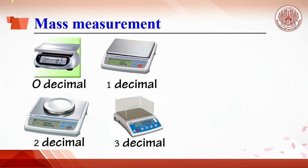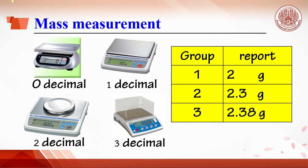Electrical balances are available in various decimal precisions. The higher the number of decimals, the more accurate the data. Looking at these three student group reports of an object's weight, we can conclude that student group 1 uses a no-decimal balance, while groups 2 and 3 use higher accuracy balances. What is the meaning of these different reports?